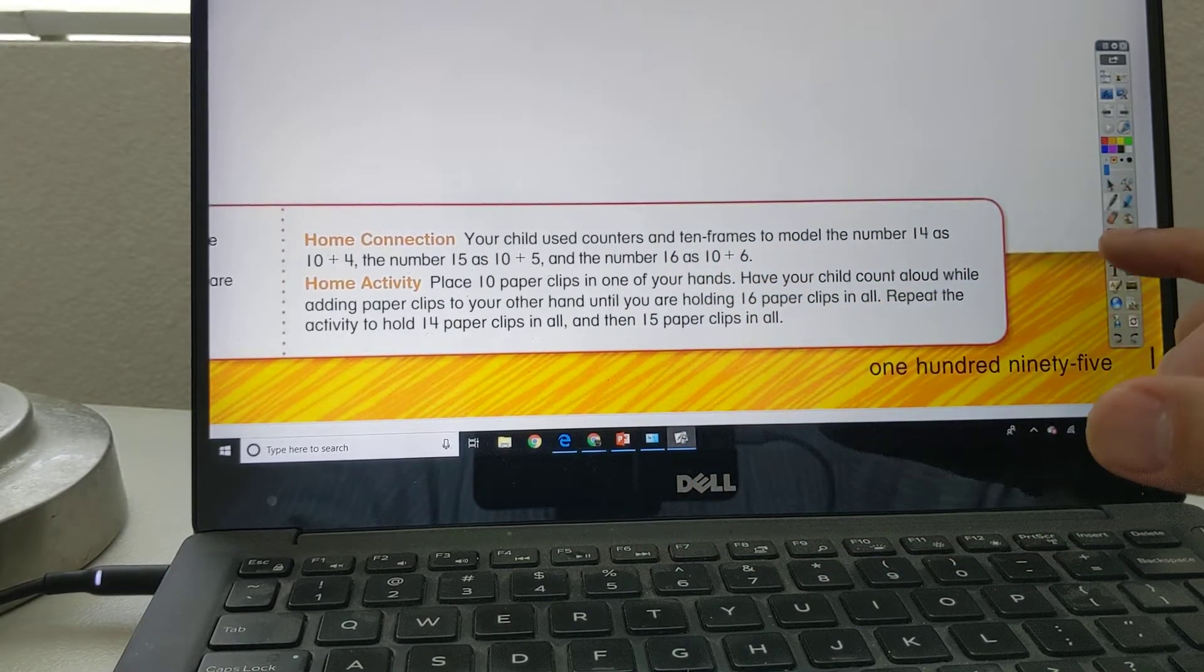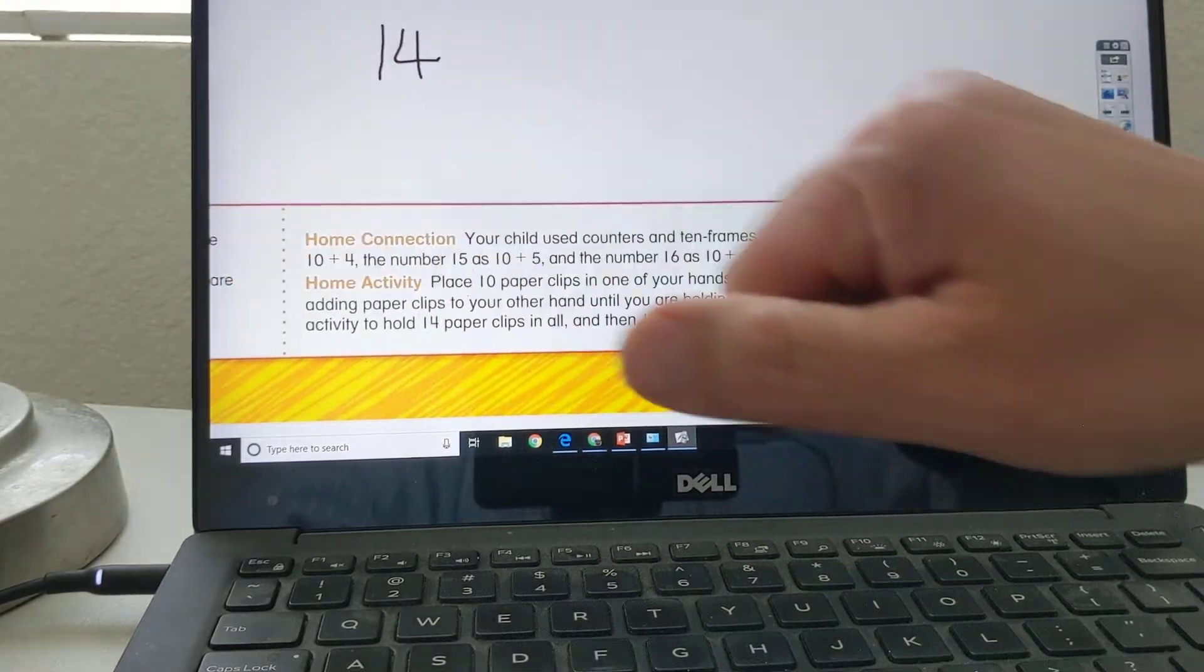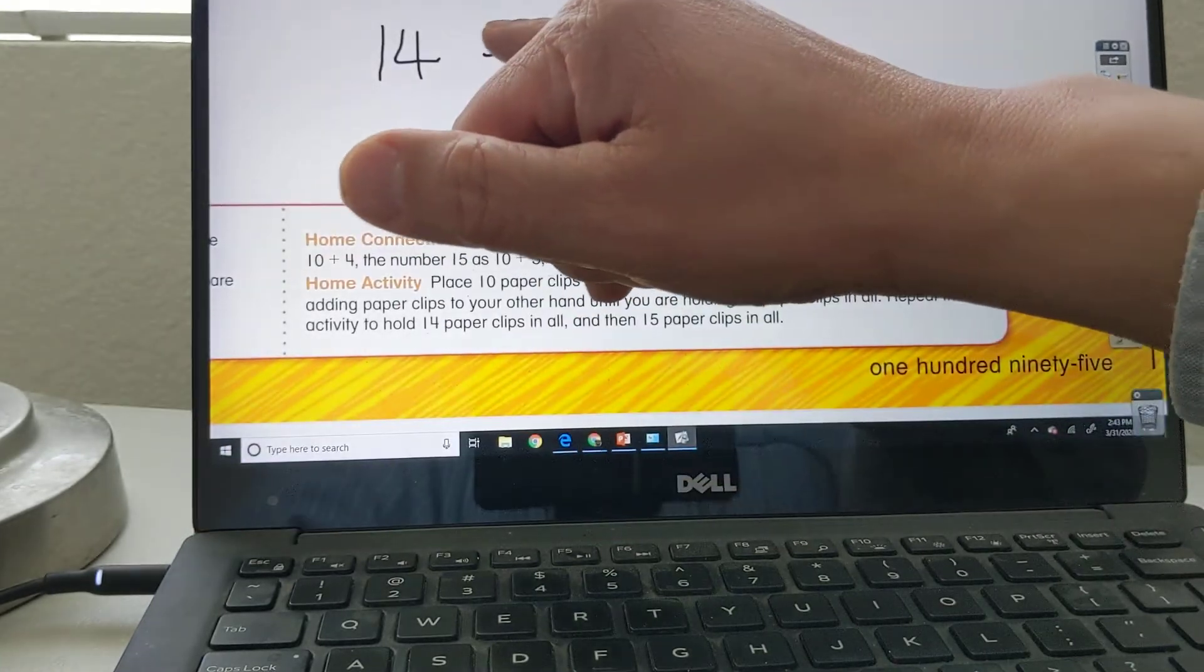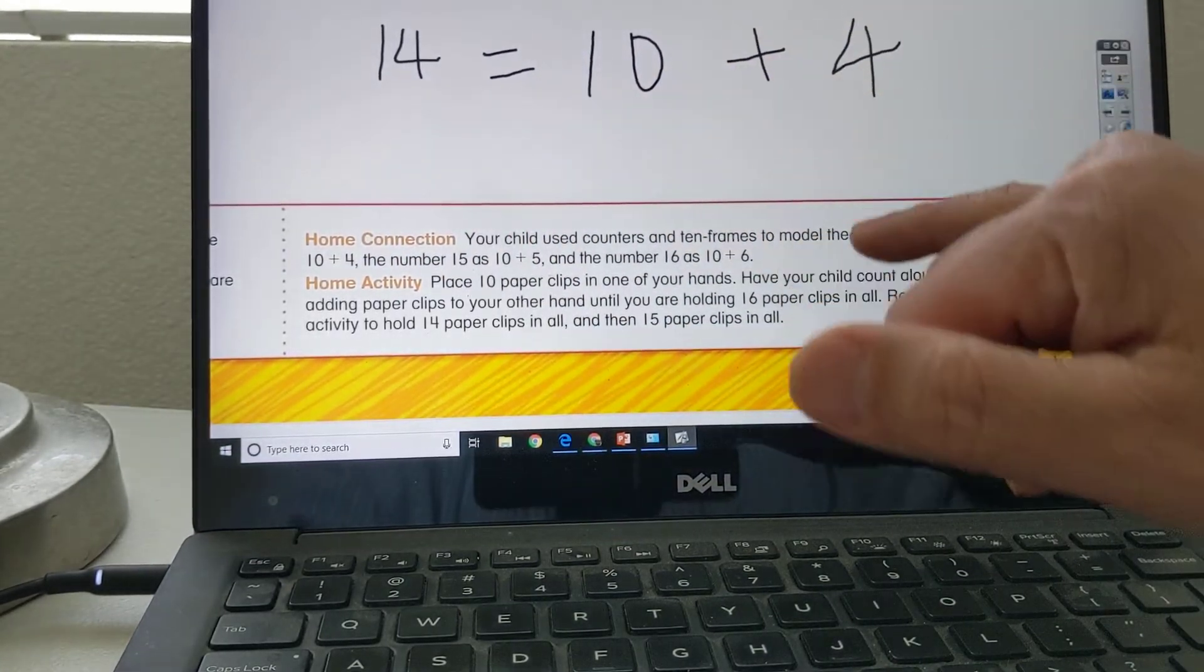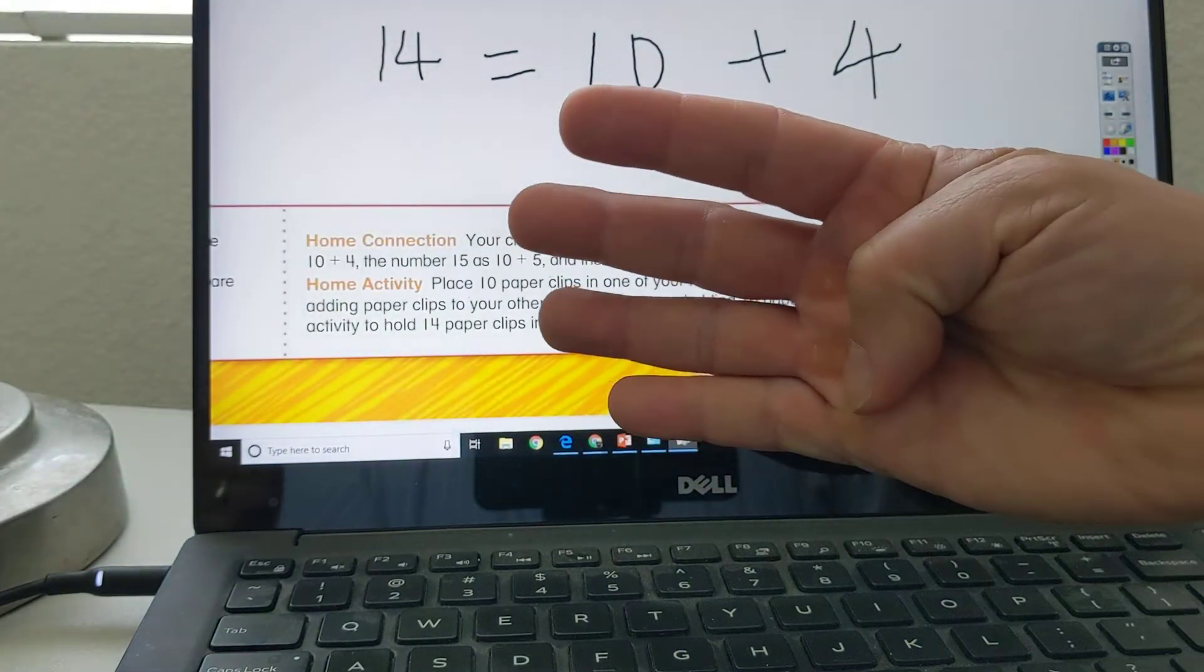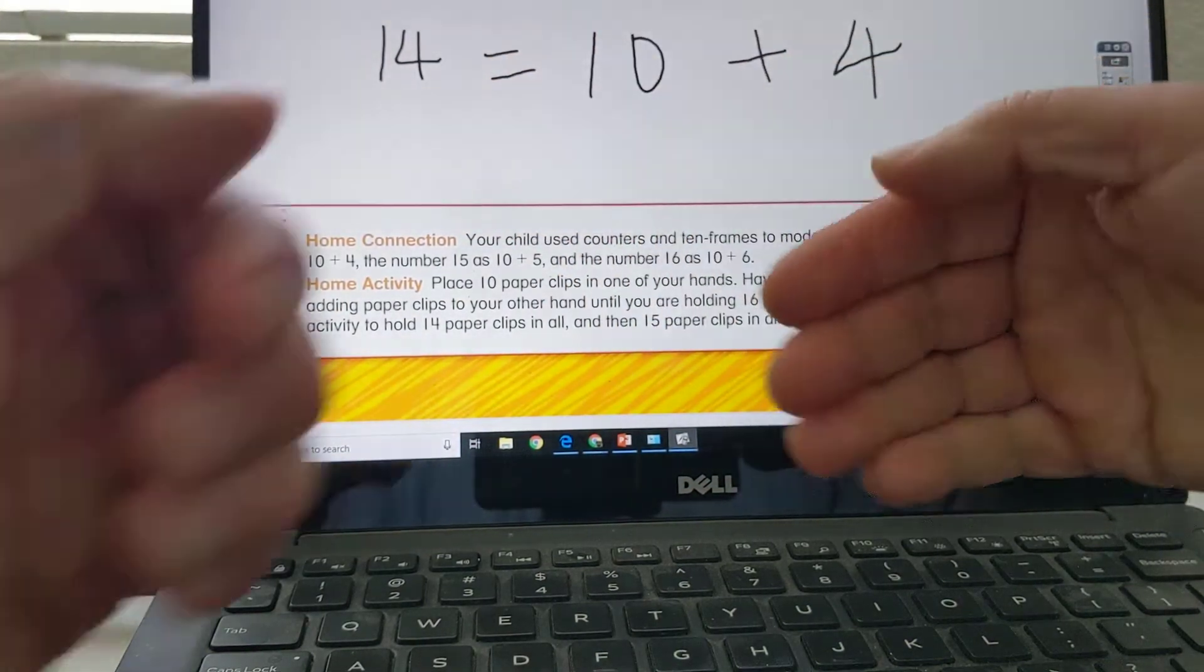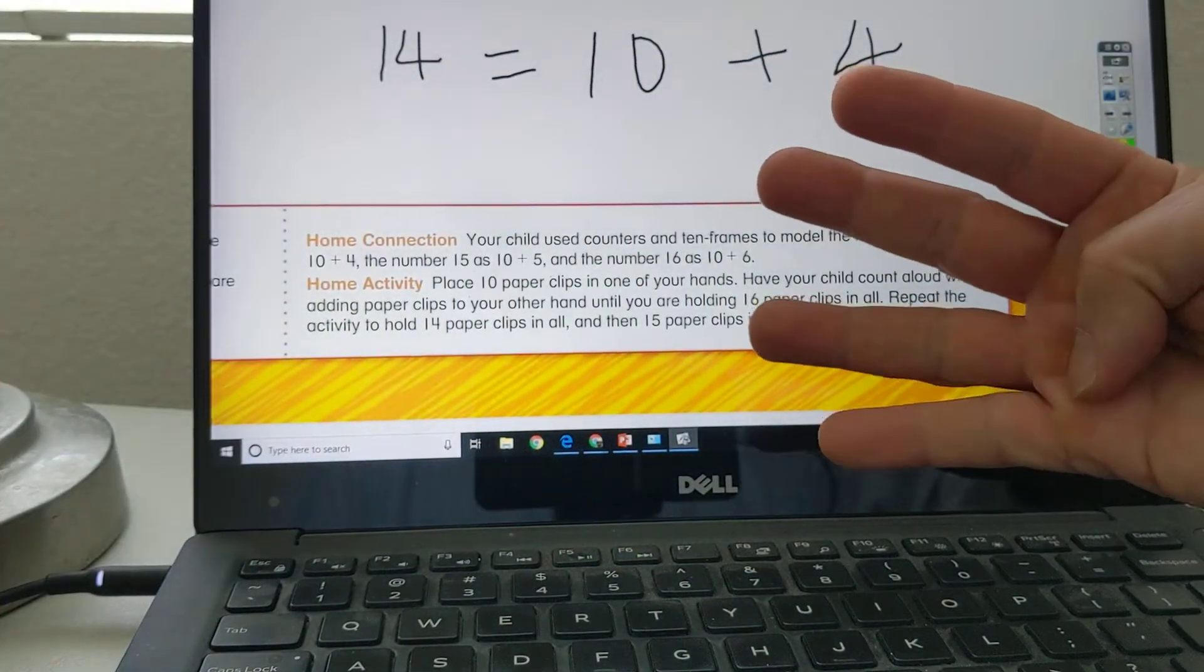So now we're using basically a similar concept as before. 14 right here as 10 plus 4 is equal to 10 plus 4. So you could use the fingers. 14 is equal to 10, all the fingers, plus 4 fingers. That's 14. So 14 is equal to 10 fingers right here, plus 4 fingers right there, as simple as that.